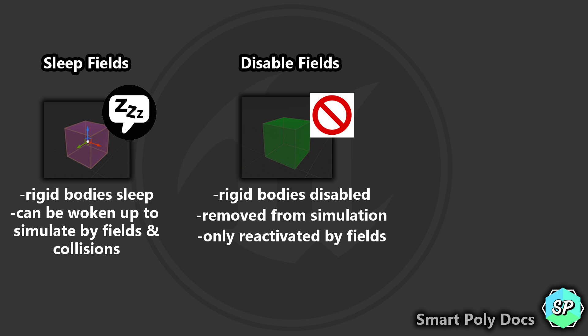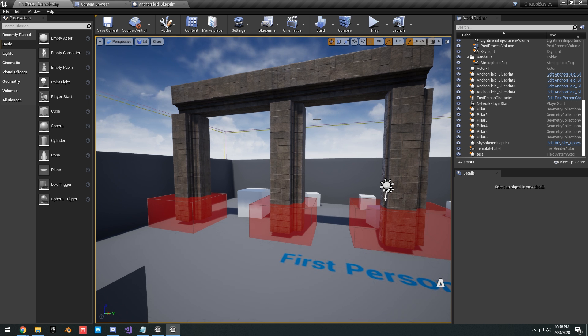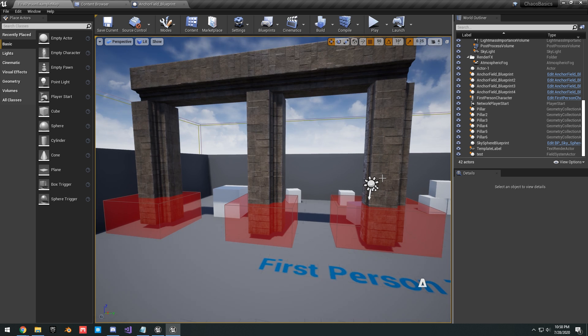Lastly, we have what is called a kill field. This type of field can stop simulation when the center of mass touches it — they can no longer be reactivated by collisions or fields. This last option is useful for when rigid bodies are no longer visible to the player; for example, if the player is really far away from a destructible asset you obviously don't want it simulating.